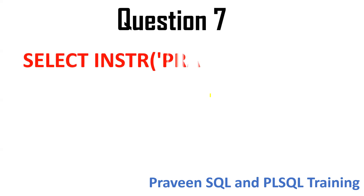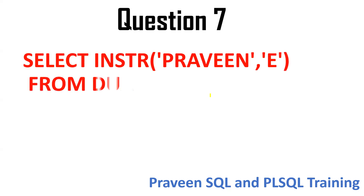The seventh question is about INSTR. INSTR gives you the position of a string or character. What is the position of 'E'? Counting: 1, 2, 3, 4, 5 — position will be 5. SUBSTR and INSTR are very important. If you want to extract a part of a string, use SUBSTR. If you want to find the position of a string, use INSTR. E is in the fifth position.